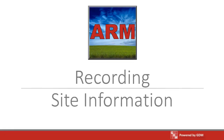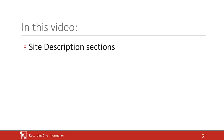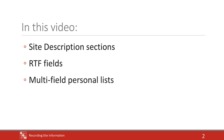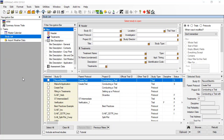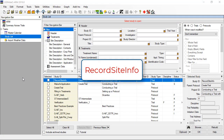Learn about the different sections of the site description editor to record the conditions under which the trial is conducted. We will also discuss RTF fields, multi-field personal lists, repeating sections, and F5 entry field help as we go. To follow along with this video, open the tutorial trial Record Site Info.